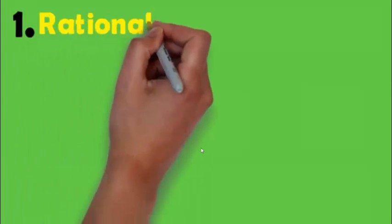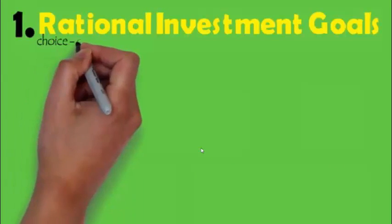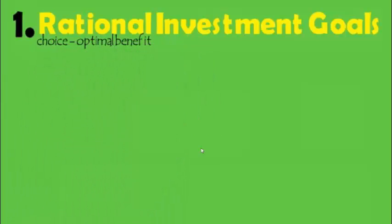The first assumption of CAPM is the rational investment goals. Now what is the meaning of rational? Rational means to make a choice, to make a decision that yields you the optimal or the maximum benefit.